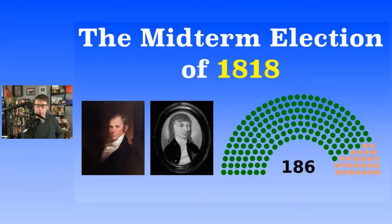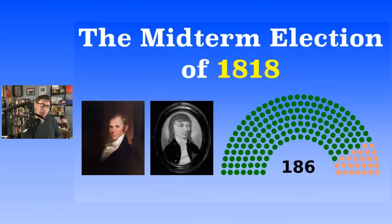In the House of Representatives, it was a little more lopsided: 186 seats total, 94 needed for a majority. The Democratic-Republicans gained 13, ending up with 158 out of 186. The Federalists only had 28 — losing 12. This would not happen in today's political climate; overwhelmingly, the country was all about the Democratic-Republican Party, led by James Monroe as president.